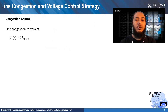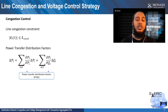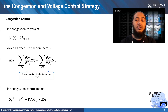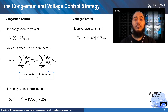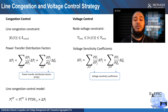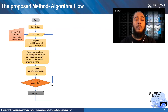For condition control, within the constraint, the power transfer distribution factor is utilized to develop the model for line condition control. For voltage control, within the constraint, the voltage sensitivity coefficient is utilized to develop the model for node voltage control.